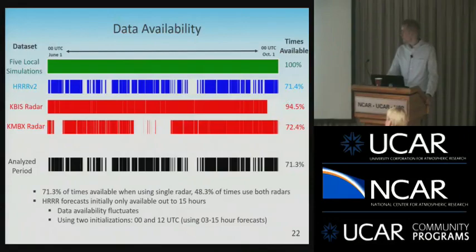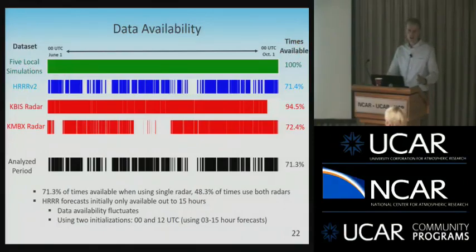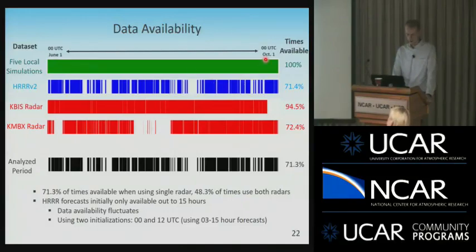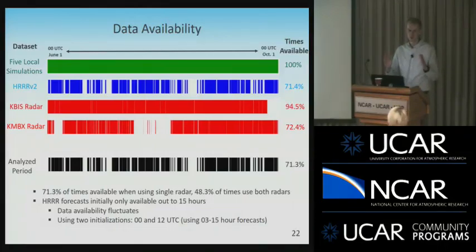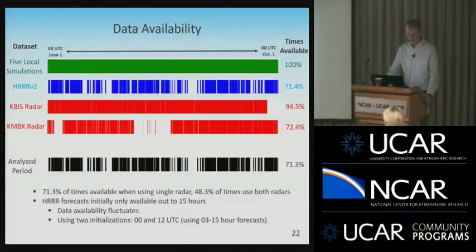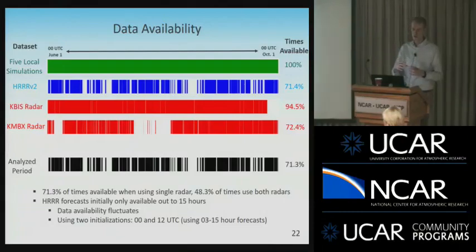The data availability slide shows our five local simulations followed by the HRRR and the different radars. The bar length represents each hour from 00 UTC June 1st to 00 UTC October 1st — the entire four-month period. The 3.1.1 WSM6, Thompson, and Thompson Aerosol-Aware simulations were available the whole time. The HRRR had more limited times with more downtime — between about hours 15 and 24 was often missing, so we used two initializations at 00Z and 12Z going out 3 to 15 hours each. Combining and filtering all this data, we're analyzing about 71% of the four-month period, and we're using merged radars when possible.